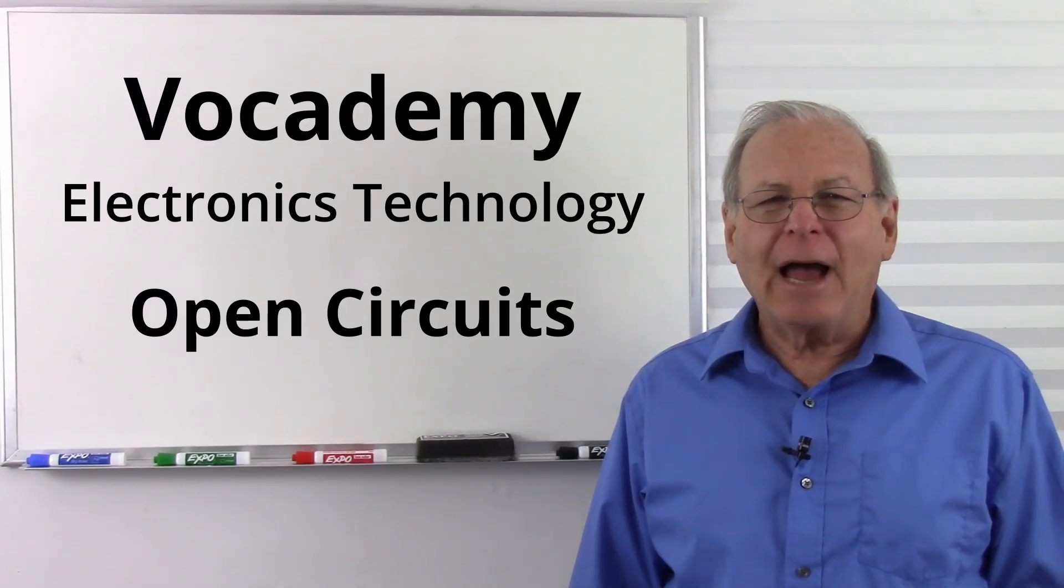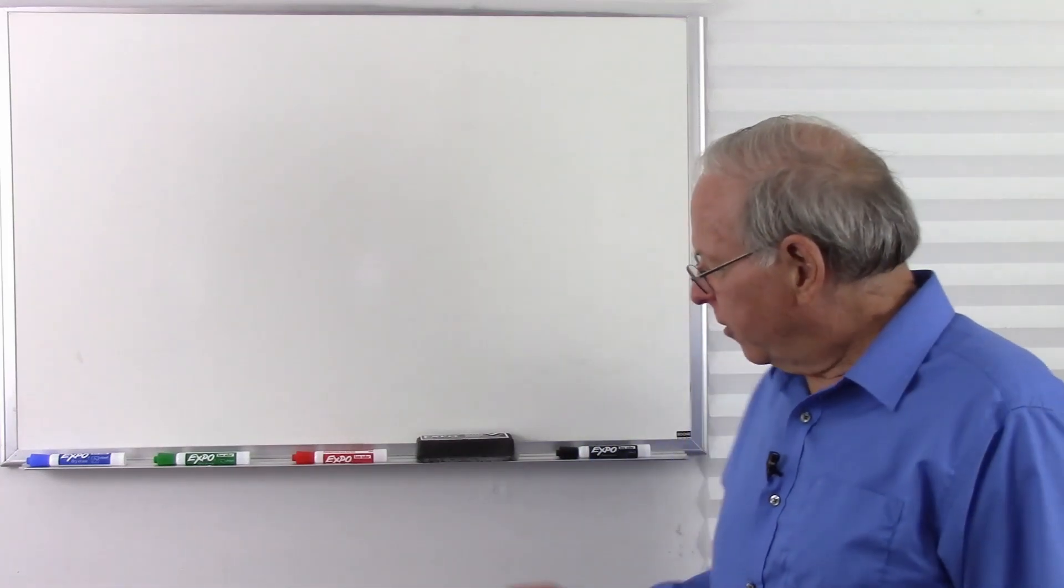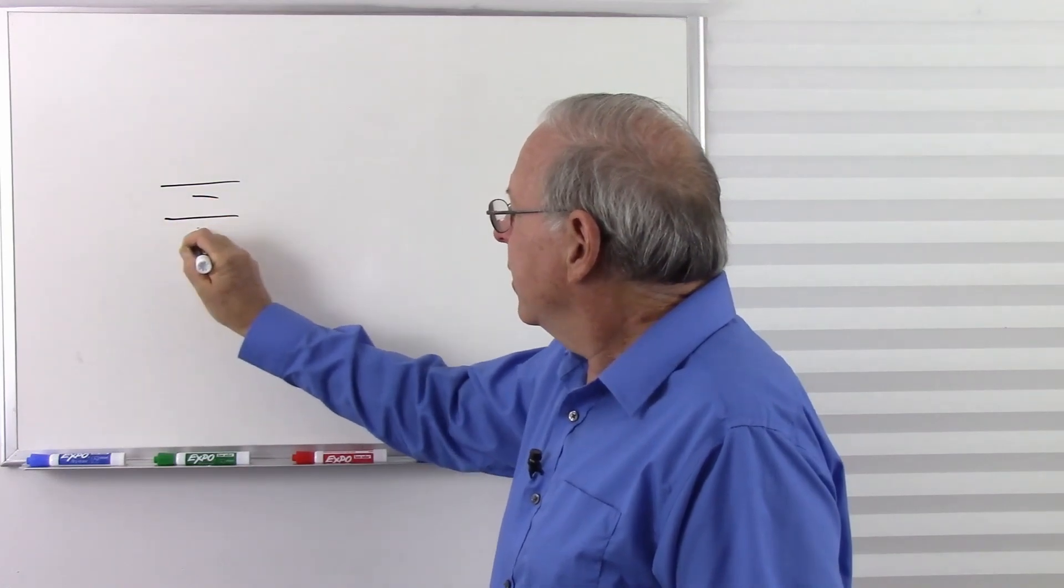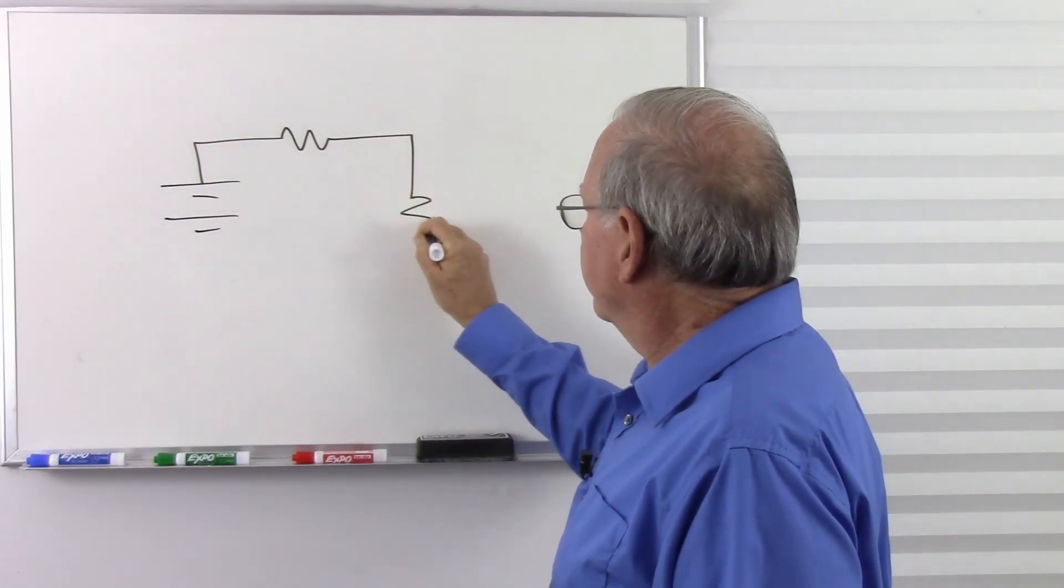I'm Bob Duhamel, and today I'm going to talk about open circuits. That seems like a pretty straightforward thing. Let's look at a closed circuit to begin with. Here's a battery. Let's put three resistors in series with that battery.